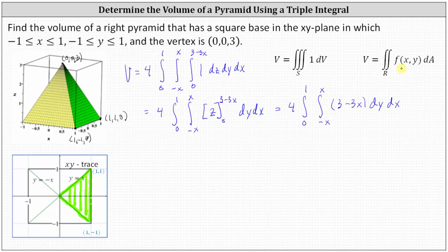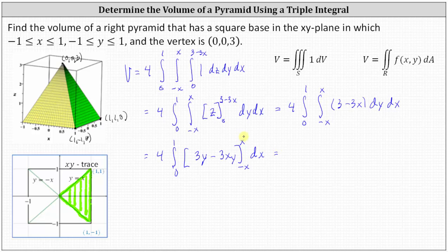Now we integrate with respect to y. The integral of 3 with respect to y is 3y, and the integral of 3x with respect to y is 3xy, since we're treating 3x as a constant. Evaluating from y = −x to y = x: when y = x we have 3x − 3x², and when y = −x we have −3x − (−3x²).